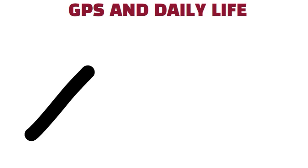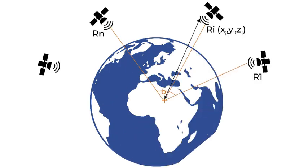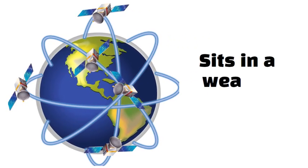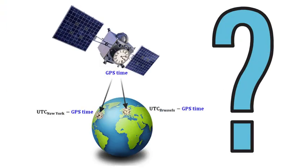GPS and Daily Life. Time Dilation isn't just a distant, abstract idea. The global positioning system depends on precise timing signals from satellites orbiting Earth. Each satellite moves quickly relative to Earth's surface and also sits in a weaker gravitational field due to its altitude. Both factors affect how its clock runs compared to clocks on the ground.